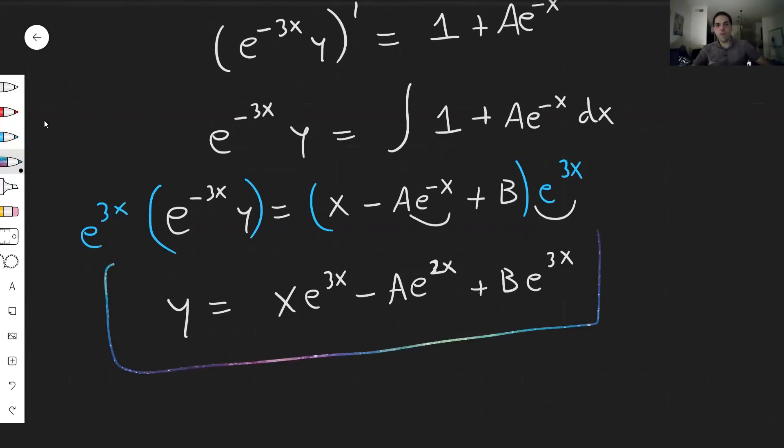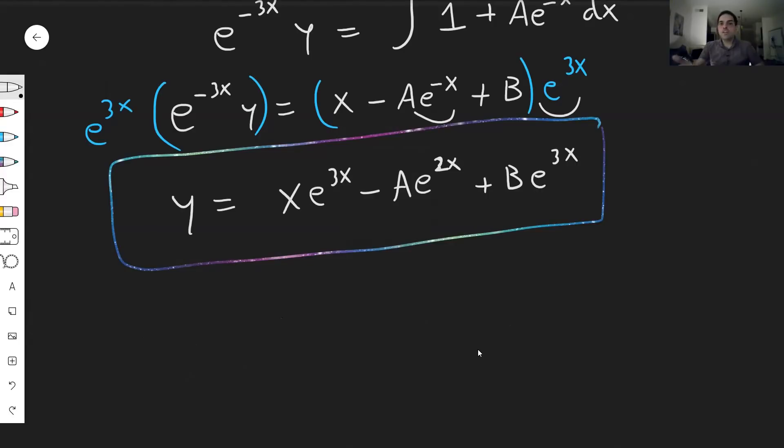And again, I just want to compare this to the usual solution you get with undetermined coefficients. If you do that, you probably get something like Ae^(2x) + Be^(3x), and then your particular solution will probably be xe^(3x) because the 3 is repeated in the root, so it's a resonance term. Well, it's exactly the same thing as here. The only difference is here we have -A, but because A is arbitrary, it doesn't matter. So in fact, it is the exact same solution.